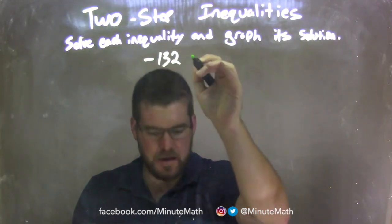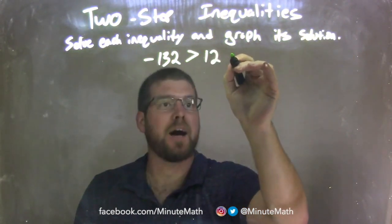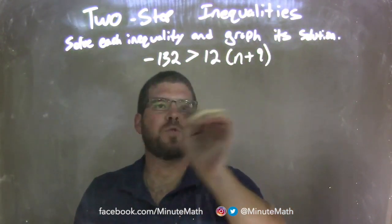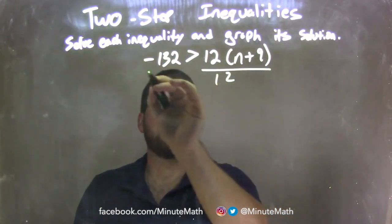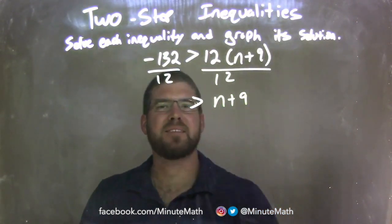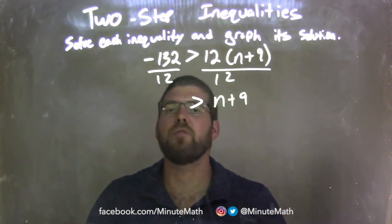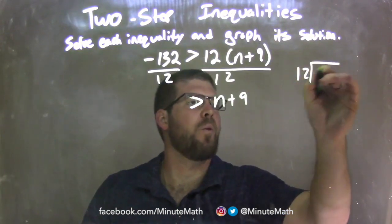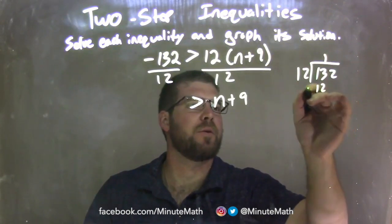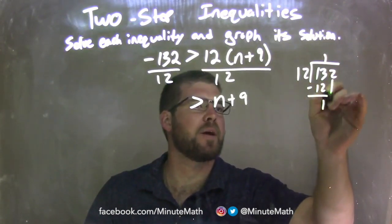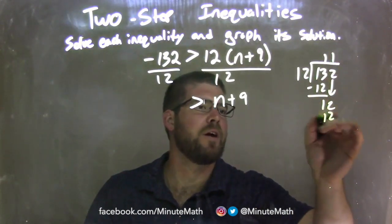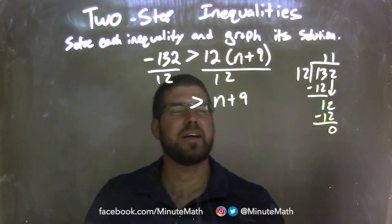Negative 132 is greater than 12 times (n plus 9). My first step: divide both sides by 12. On the right I'm left with just n plus 9. On the left, I need to work out 12 into 132: 12 goes into 13 one time, 1 times 12 is 12, subtract gives 1, bring down the 2 — 12 goes into 12 one time. So 132 divided by 12 is 11. Negative 132 divided by 12 is negative 11.